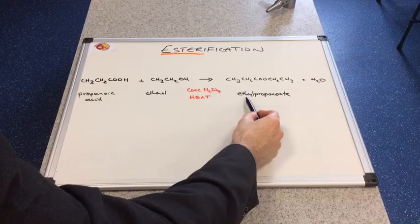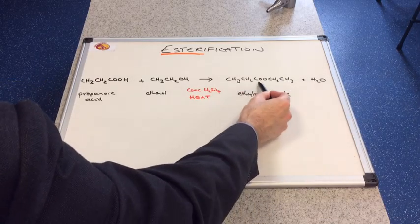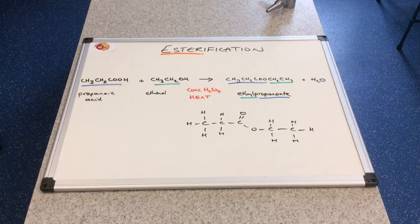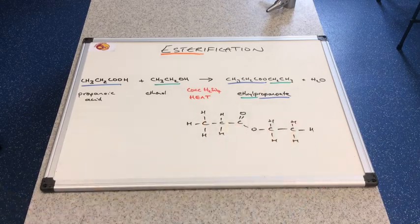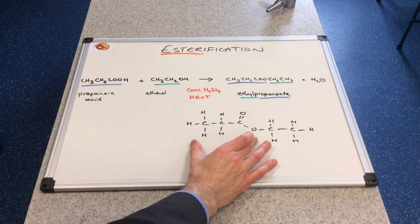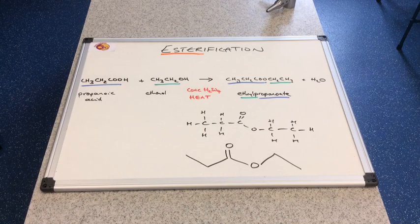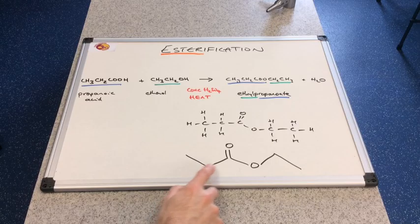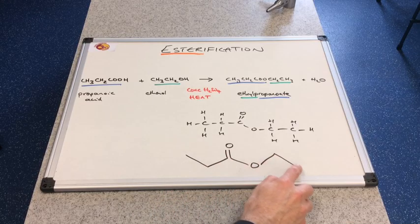And there's the name of the ester. So we're naming this ester back to front: ethyl propanoate. There's the displayed formula of the ester. So you can see the displayed part of the ethyl group and the displayed part of the propanoate group. And there's the skeletal formula: CH3, CH2, C double bond O, single bond O, CH2, CH3.